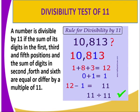We can have the divisibility test of 11. When is a number divisible by 11? A number is divisible by 11 if the sum of digits in the first, third, and fifth positions and the sum of digits in the second and fourth positions are equal or differ by a multiple of 11 — that is, the difference is 0 or a multiple of 11. For example, let us have the number 10,813. You look at the first, third, and fifth positions: that is 1, 8, and 3. So you get 1 plus 8 plus 3 to get 12. The digits in the second and fourth positions are 0 and 1, which we add to get 1.